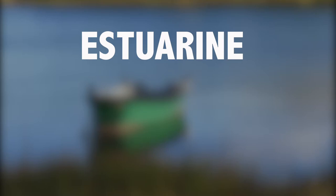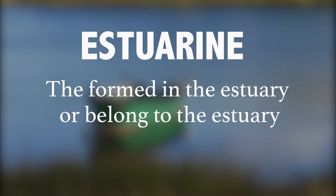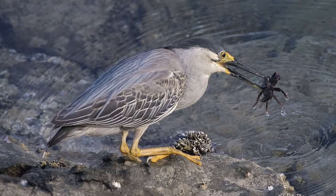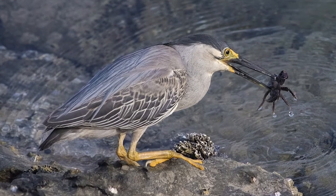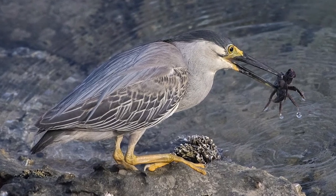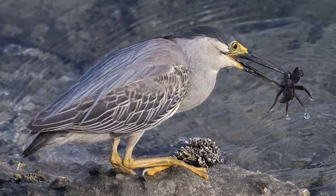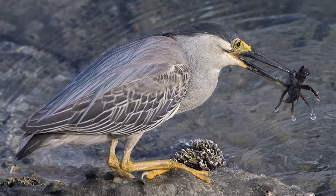On the other hand, 'estuarine' is the word that refers to something formed in the estuary or belonging to the estuary — for example, estuarine birds, estuarine currents, and so on.